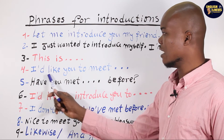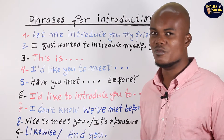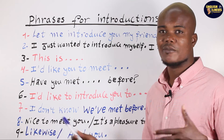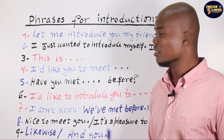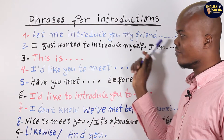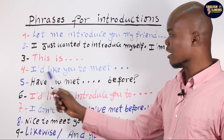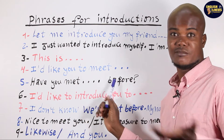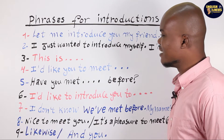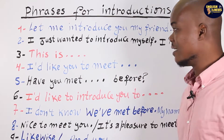You say: 'I'd like you to meet Telmon.' Good. So: 'Let me introduce you, my friend' — 'This is Telmon' — 'I'd like you to meet Telmon.' Those are all ways to introduce someone. And another way you can say it is: 'Have you met?'